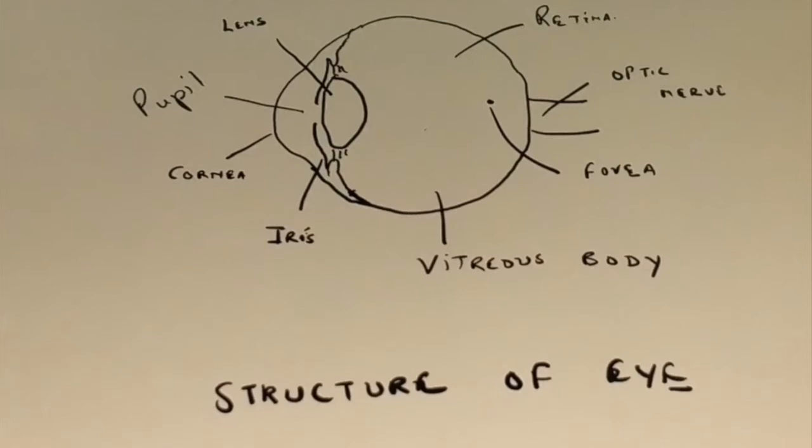Now the retina is the innermost layer of the eye. In between the retina and the lens there is an empty cavity called the vitreous cavity. It is filled up with what is called the vitreous body, a semi-solid structure.